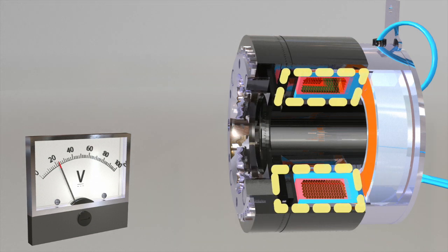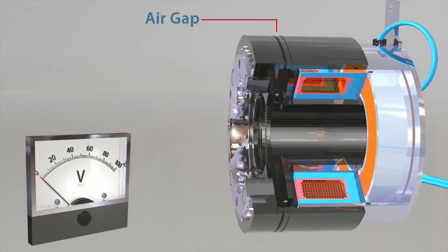When power is removed from the clutch field, the springs in the armature hub pull the armature away from the rotor teeth, creating a small air gap and providing complete disengagement from the input to the output.